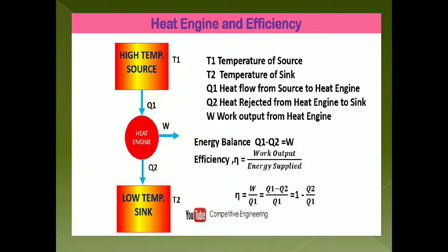Since W equals Q1 minus Q2, we can replace W to get efficiency as (Q1 minus Q2) divided by Q1. Separating the denominator gives Q1/Q1 minus Q2/Q1, where Q1 cancels out, leaving 1 minus Q2/Q1. So to find the efficiency of any heat engine, you just need to know the values of Q1 and Q2 — the heat flowing from the source and the heat rejected to the sink.